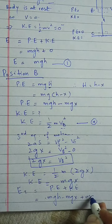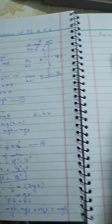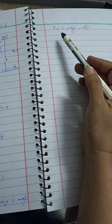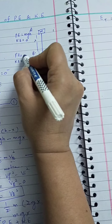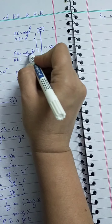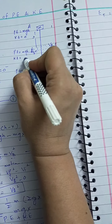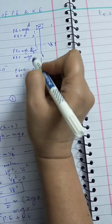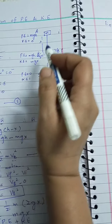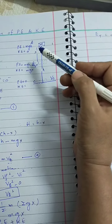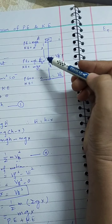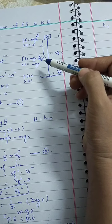Equation 1 shows the total energy at position A and equation 2 shows the total energy at position B — both equal mgh. Now we move to point C. At point C, the body has covered the full height h and strikes the ground, so height is 0 and potential energy is 0. We can put the potential energy value as mg(h − x) and kinetic energy as mgx for the intermediate verification.